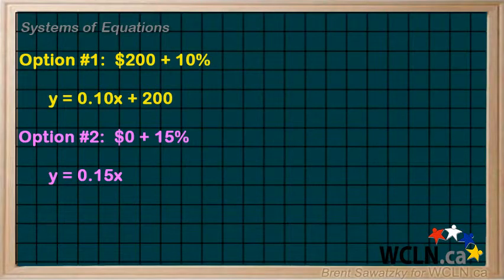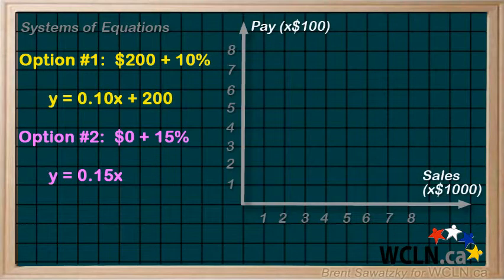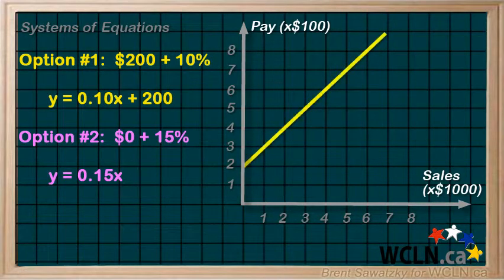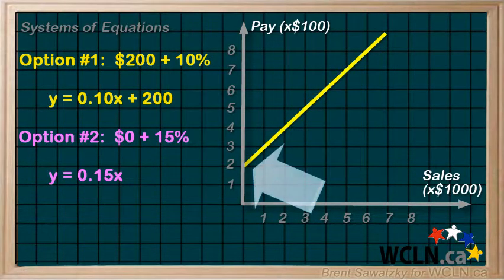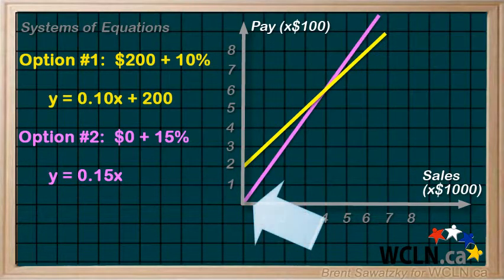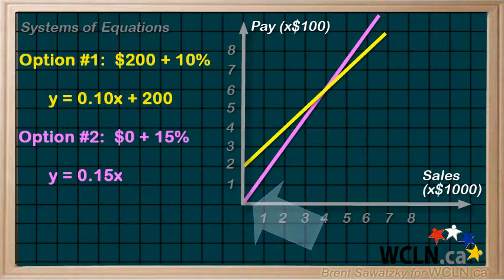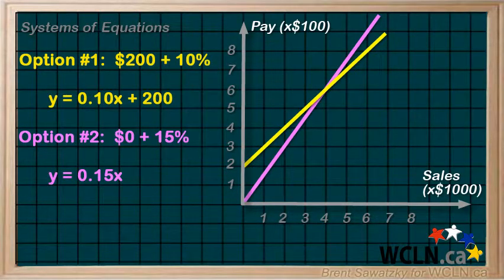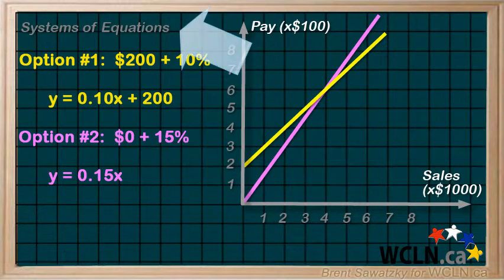Let's graph to visualize these options better. So, here's our option 1, starting at 200, and growing at 10% from there. And here's option 2, starting at 0, but growing at 15% from there. These are two relationships that use the same variables, so they can be graphed on the same grid, which makes them a system of equations.